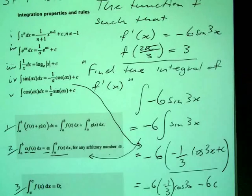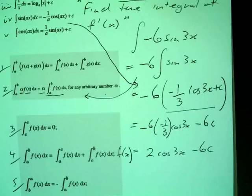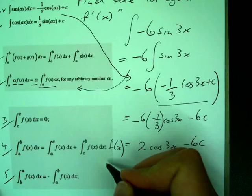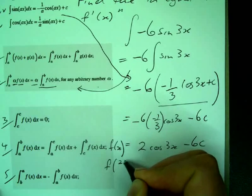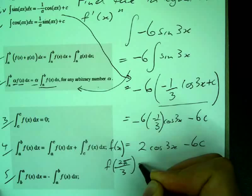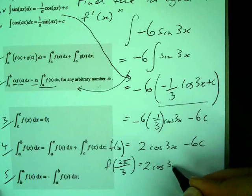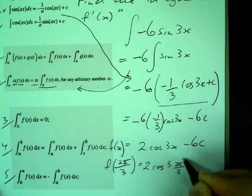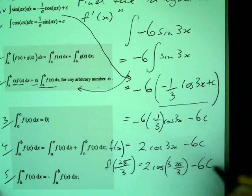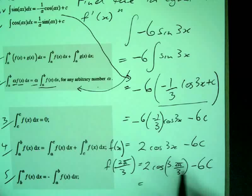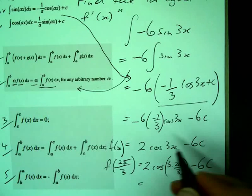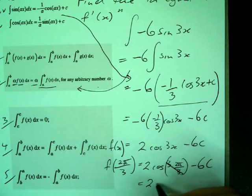And now we need to go up the top and use what we had here. f of 2π over 3 equals 3. I'm going to substitute that in. f of 2π over 3. So I get 2 cos of 3 times 2π over 3 take 6c. Can I simplify anything inside those brackets there?